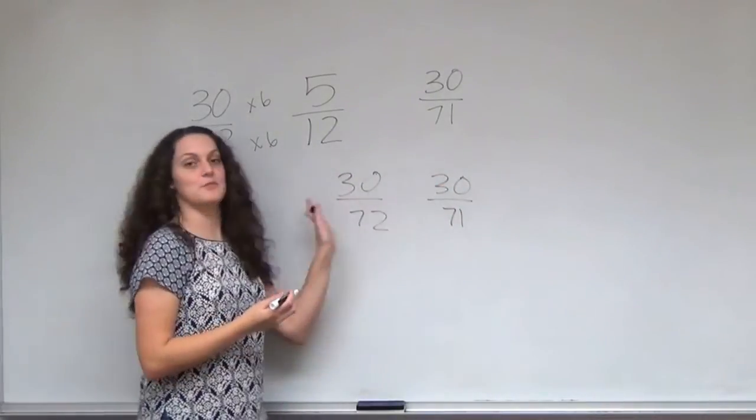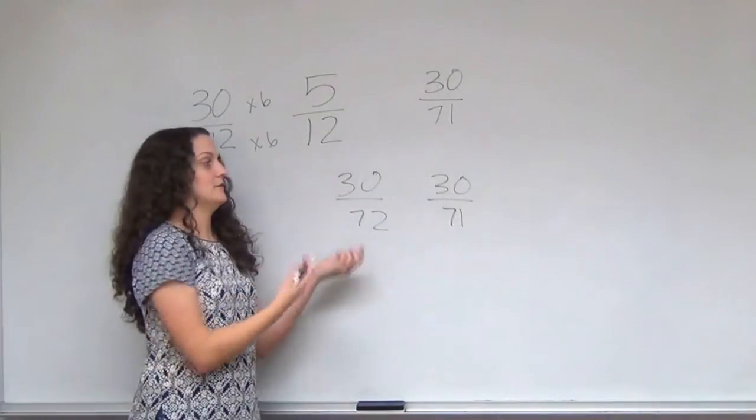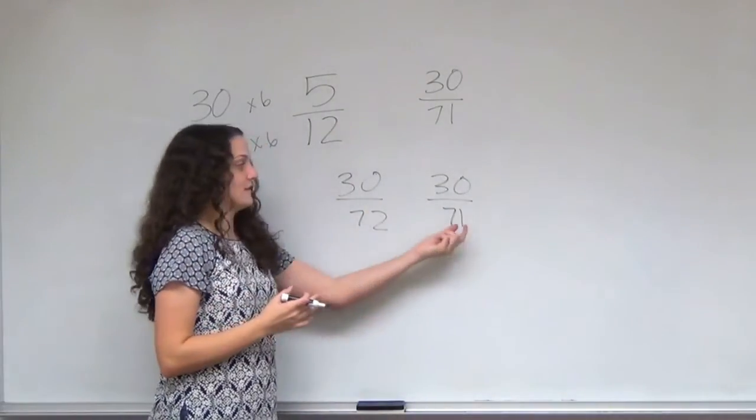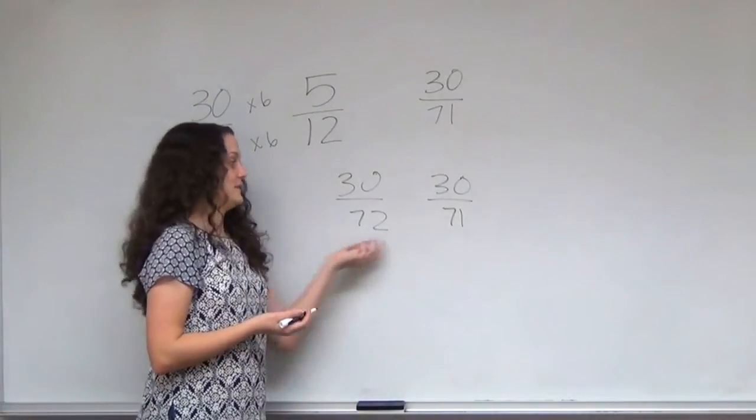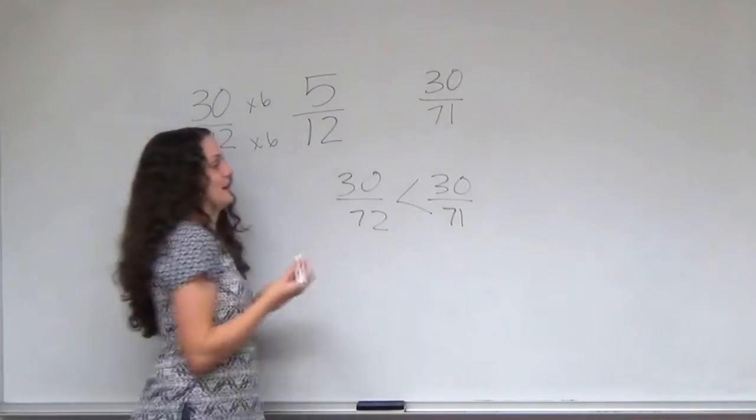So since I have the same amount of parts, all I have to think about is which are bigger parts, which are 71sts, because it's partitioned less times. So that is the greater fraction.